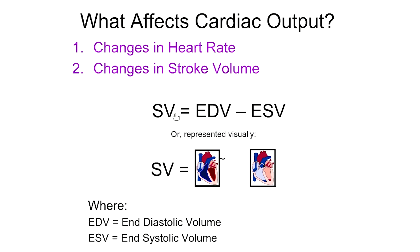Stroke volume is equal to the EDV minus what's known as ESV — the end systolic volume. Systole is the time when the heart is contracting, when blood is being pushed from the left ventricle out into the aorta. So the volume of blood at the end of systole — at the end of contraction in the left ventricle — is our end systolic volume. Note: a minus sign was missing from the slide, so stroke volume equals end diastolic volume minus end systolic volume.